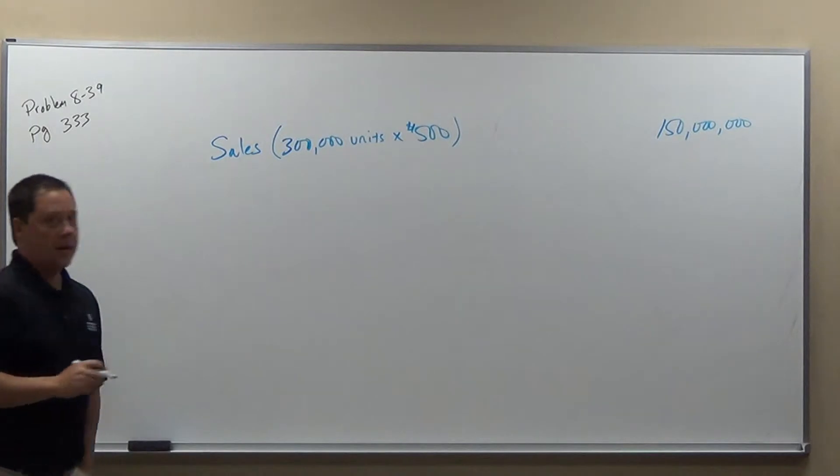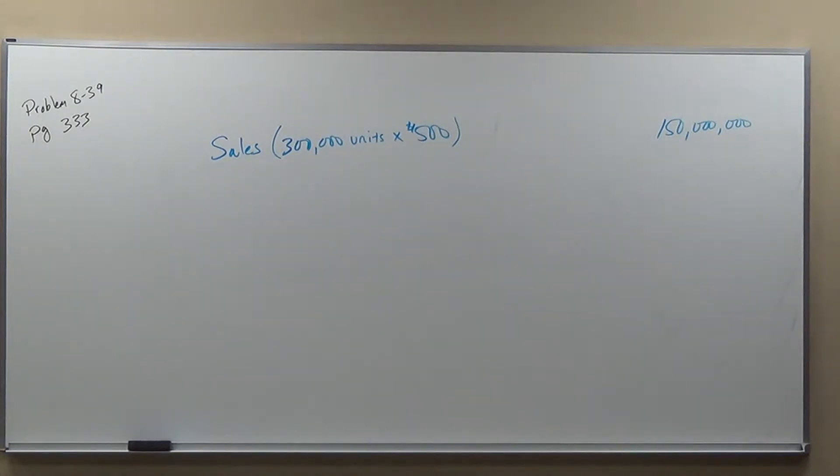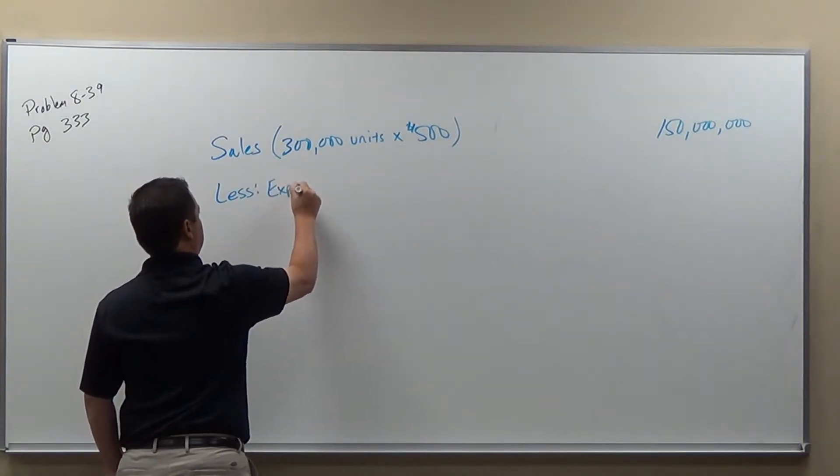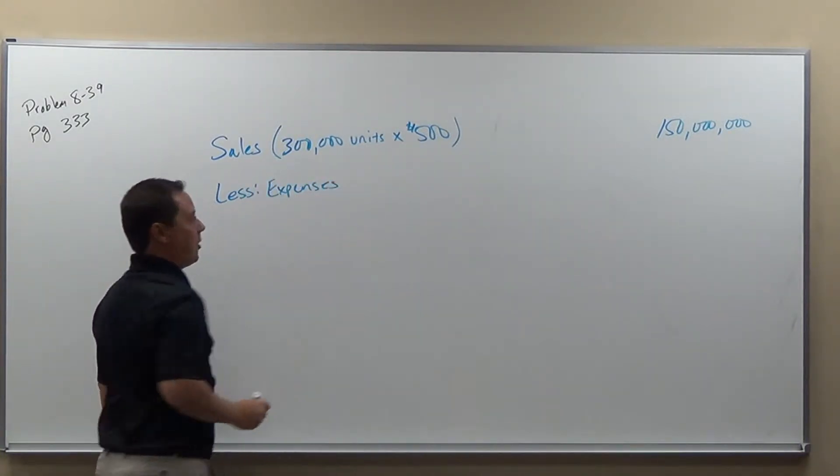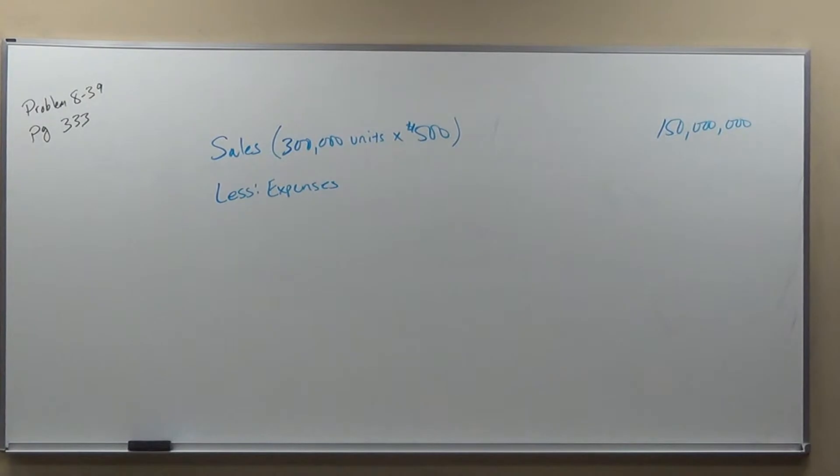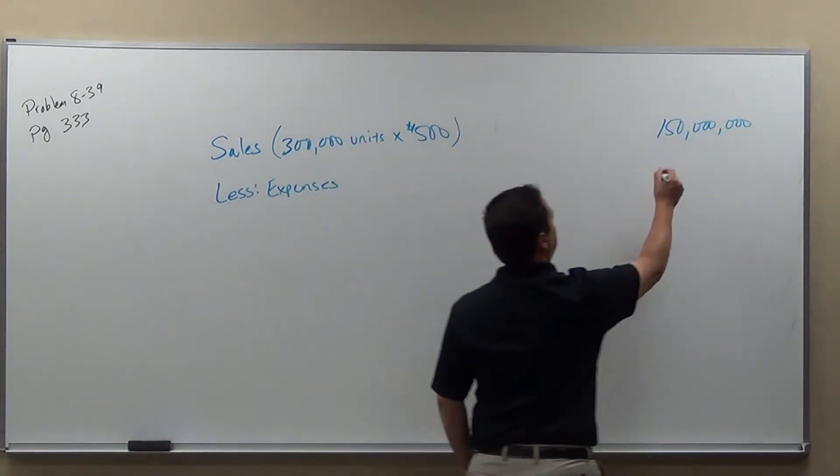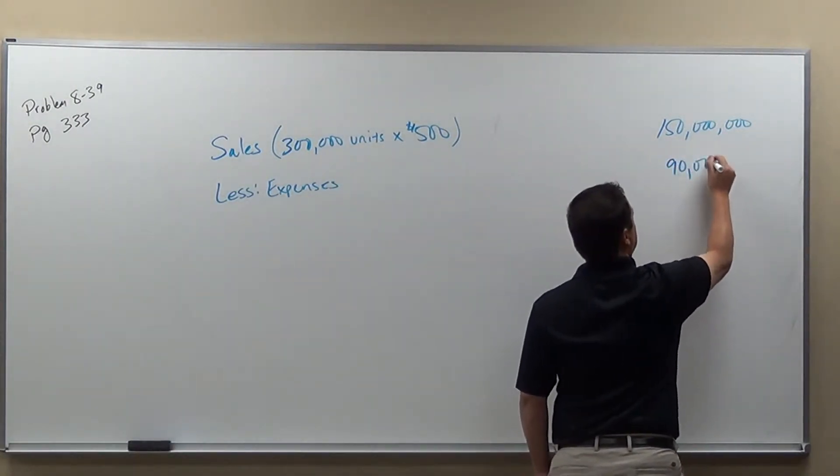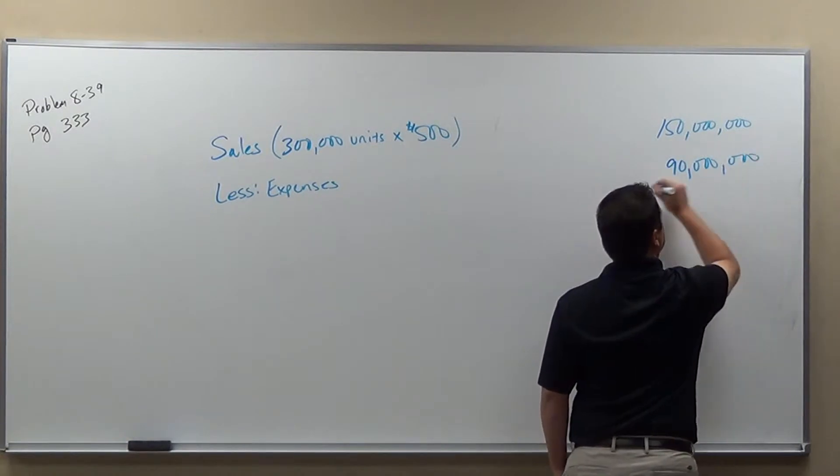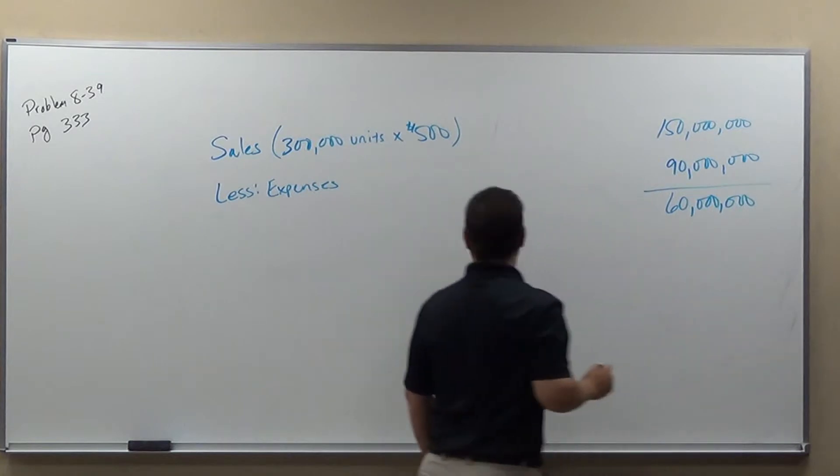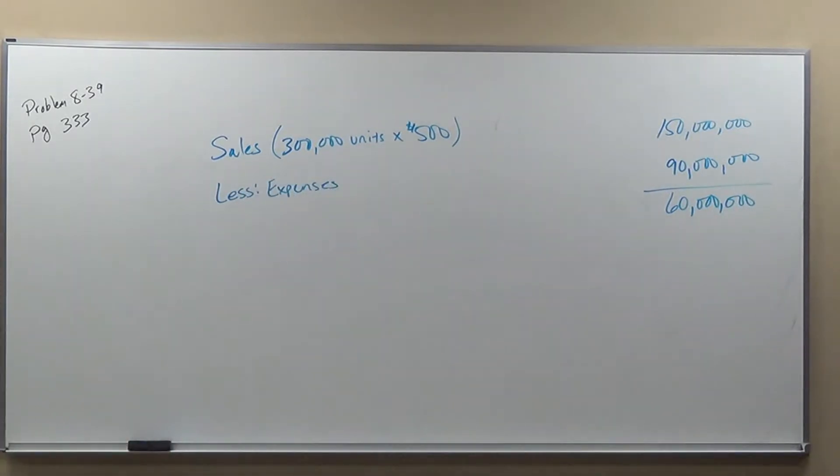So we have $150,000,000. Now let's take a look at the expenses. We're going to take away expenses here. So less expenses. They gave us 90 million in expenses here. So we're going to take that away. We have 60 million. 60 million that they have is a profit margin.